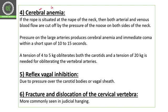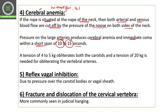The third cause is cerebral anemia — low blood flow or low oxygen to the brain. If the rope is situated at the neck, both arterial and venous blood flow are cut off by pressure of the noose. Pressure on the large arteries produces cerebral anemia and immediate coma within 10 to 15 seconds. A tension of 4 to 5 kg obliterates both carotid arteries, and 20 kg is needed to obliterate the vertebral arteries.